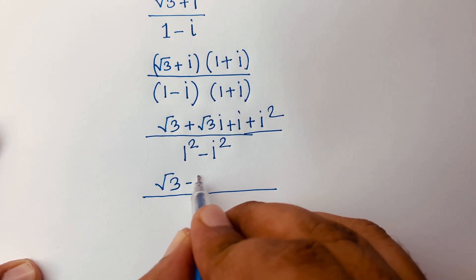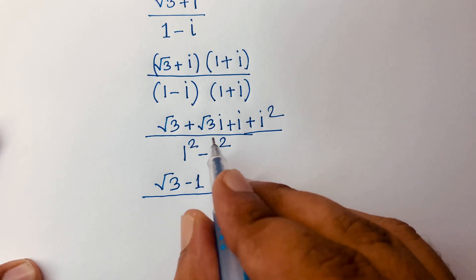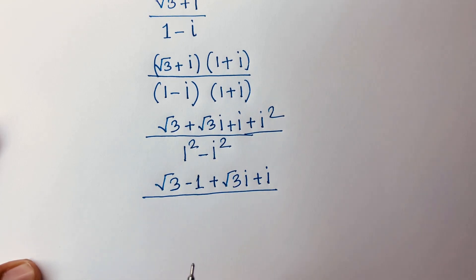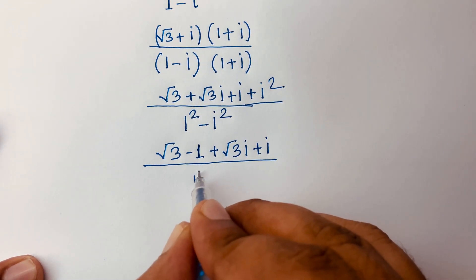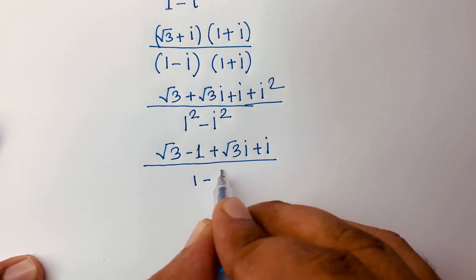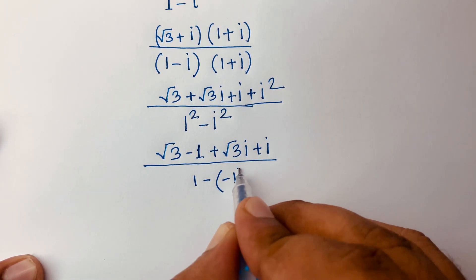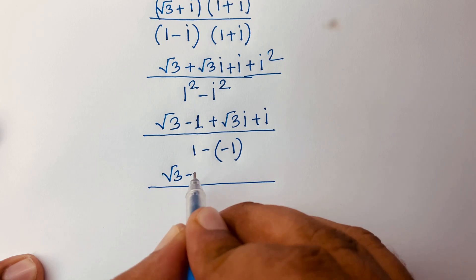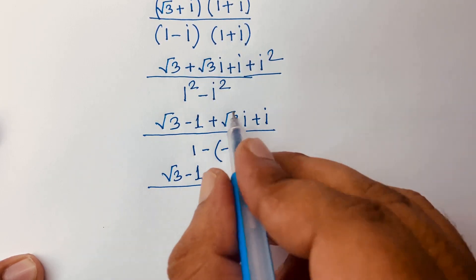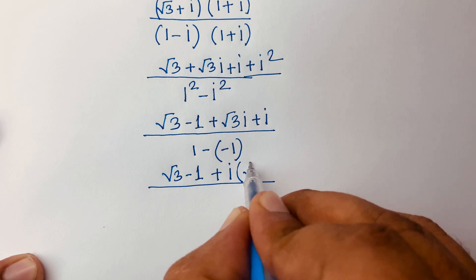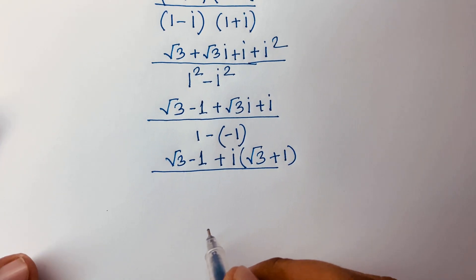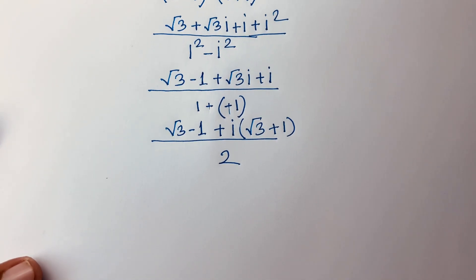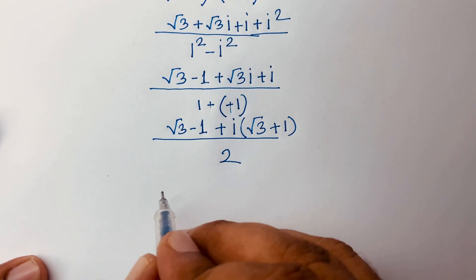So the numerator is square root 3, and since i squared equals minus 1, we substitute that. We get square root 3·i plus i over 1 squared minus i squared. Since i squared is minus 1, the denominator is 1 minus (minus 1) = 2. So the real part is square root 3 minus 1 over 2.